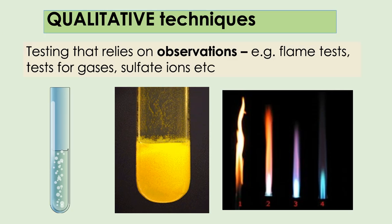Before talking about instruments, let's quickly cover qualitative versus quantitative. The last few lessons we've been looking at qualitative techniques. Qualitative techniques are to do with quality — testing that relies on observations. For example, in the flame test you could tell by your observations which metal was present, when we tested gases you could tell which gas was present, and when testing for sulfate ions or halide ions you could tell by observations which ions were present in your solution.